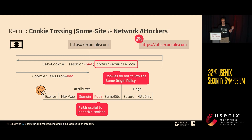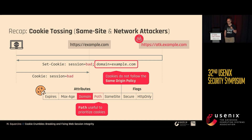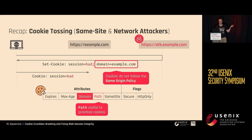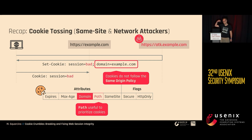Just so we are all on the same page, this is a brief recap of cookie tossing. This is an attack that can be mounted from the same-site position or from a network attacker. About same-site, this is typically the case when you have a compromised subdomain. If you have a subdomain controlled by the attacker, the attacker can forge a cookie into the victim's browser with a domain attribute, scoping it to the entire site — from the apex domain to all its subdomains.